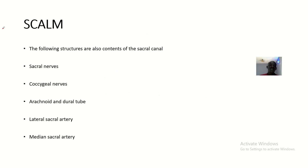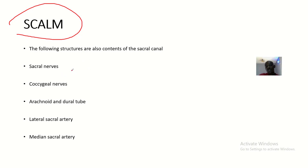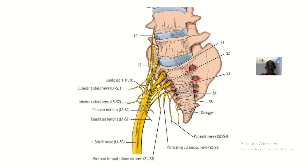The memory aid for the contents of the sacral canal is CALM. The following structures are found in the sacral canal: sacral nerves, coccygeal nerves, arachnoid and dural tube, lateral sacral artery, and median sacral artery.